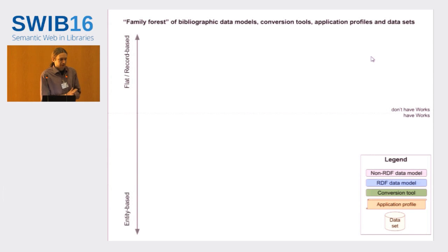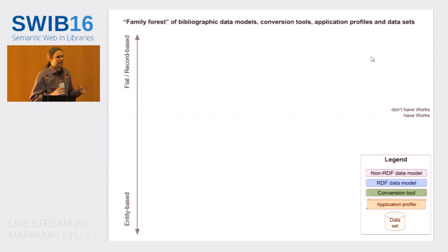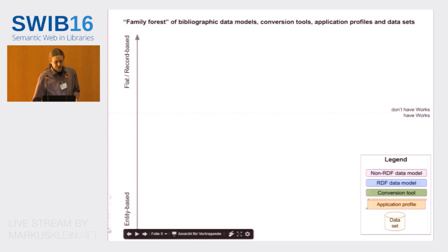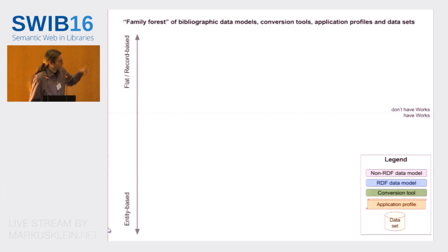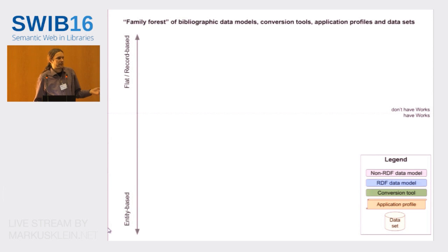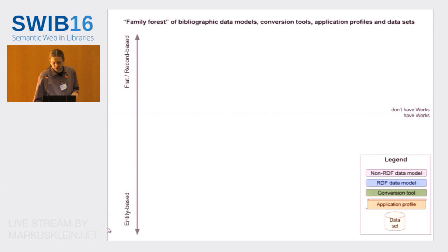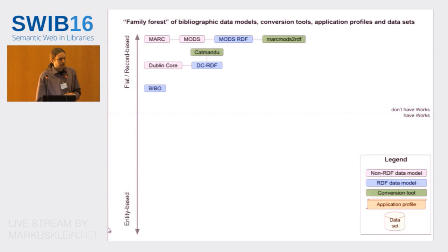I also tried to put in the same picture all the various tools available for converting between these, and also some data sets and application profiles. The most important dimension I wanted to look at is whether these models are basically flat or record-based — where you combine everything about the bibliographic entity into a single record — or whether it splits between different kinds of entities. The flat ones will be on the top and the entity-based on the bottom. There is also a line dividing whether the models have an explicit representation of works as a separate thing.